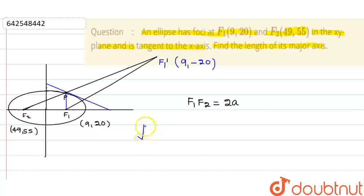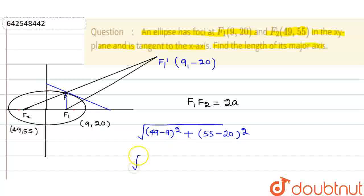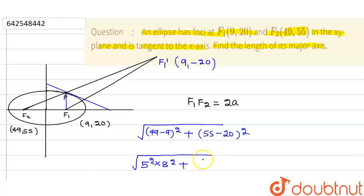The distance is the square root of: (49 − 9) squared plus (55 − (−20)) squared, which is root of 40 squared plus 35 squared. Now 40 can be written as 5 times 8, and 35 can be written as 5 times 7.